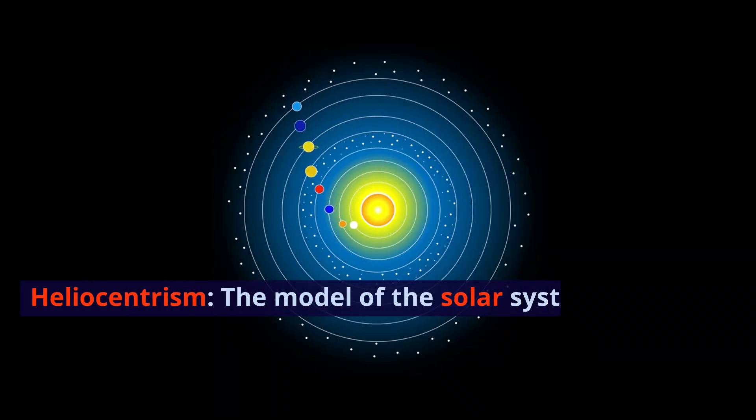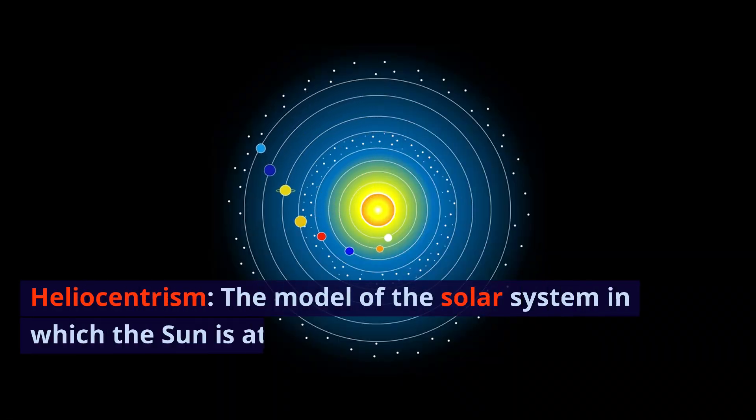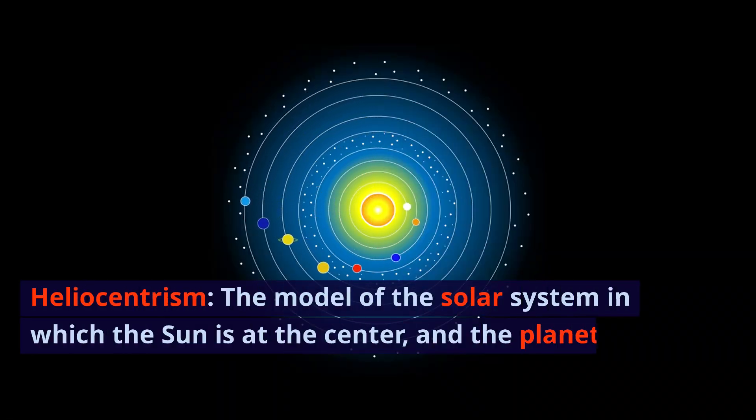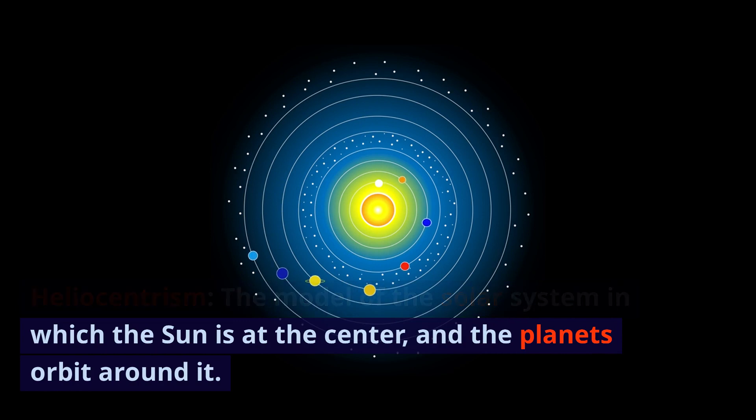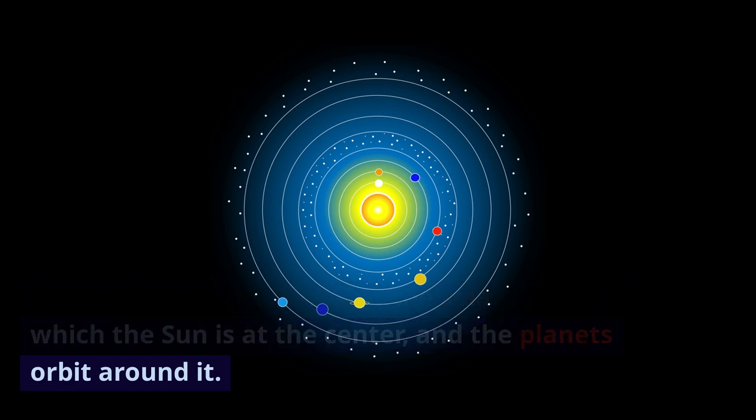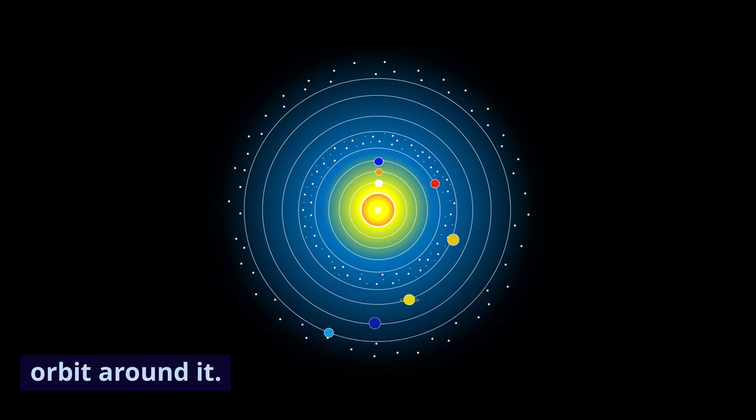Heliocentrism: the model of the solar system in which the Sun is at the center, and the planets orbit around it.